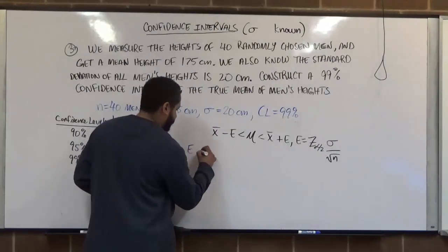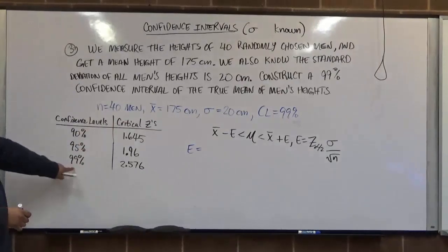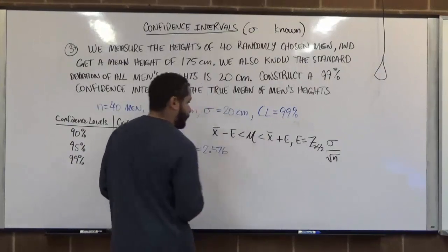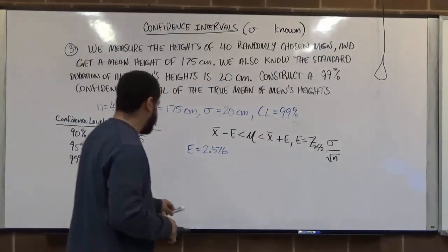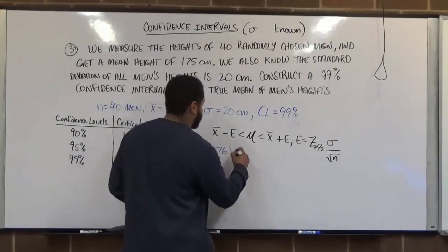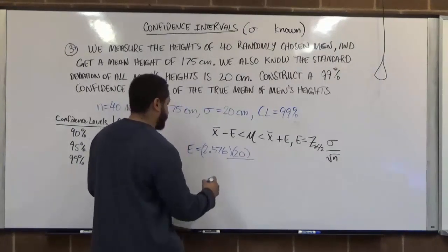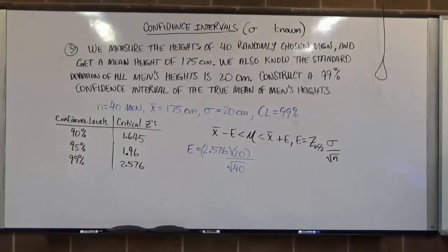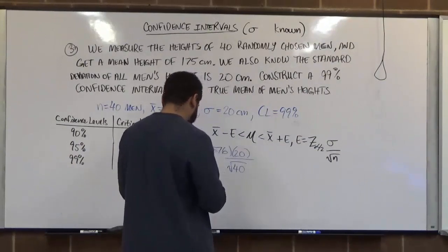So here we have our E value. Our E value is our z critical. Again, we have a 99% confidence level, so we're using 2.576. And after we have the 2.576, we're going to multiply this by the standard deviation, which is 20, and divide that by the square root of the number of samples, which is 40. So let's go ahead and calculate these things. I'm just going to grab my phone for calculation.